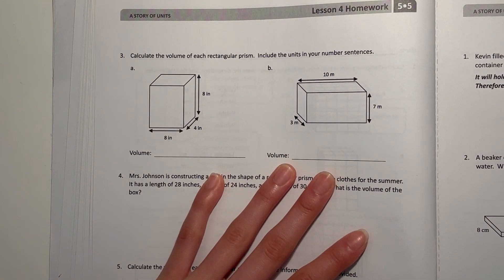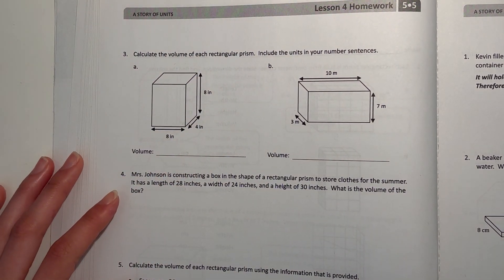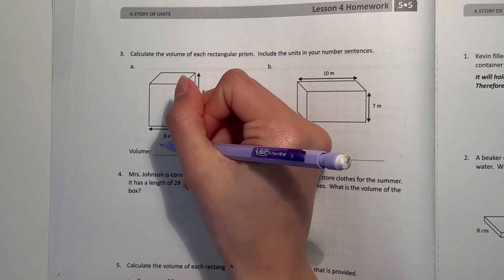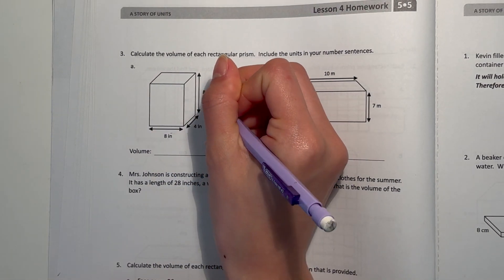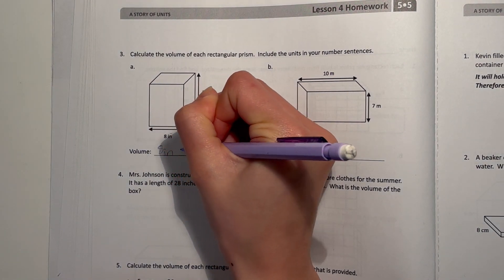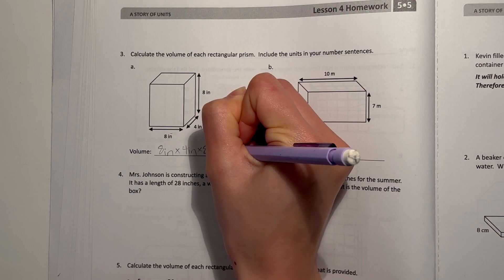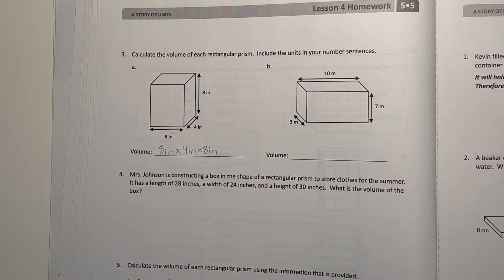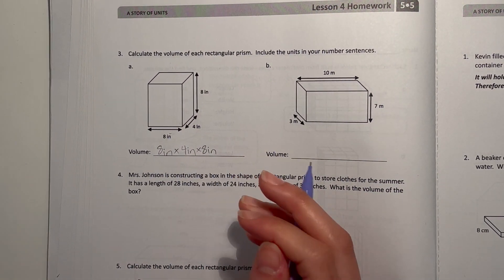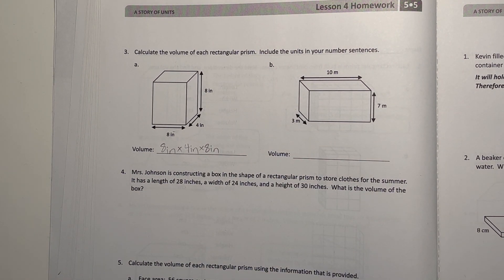For three, calculate the volume of each rectangular prism. Include the units in your number sentence. So volume is eight times four times eight, length times width times height. Eight inches times four inches times eight inches. That's eight times 32, which is 32 times eight is 256 cubic inches.